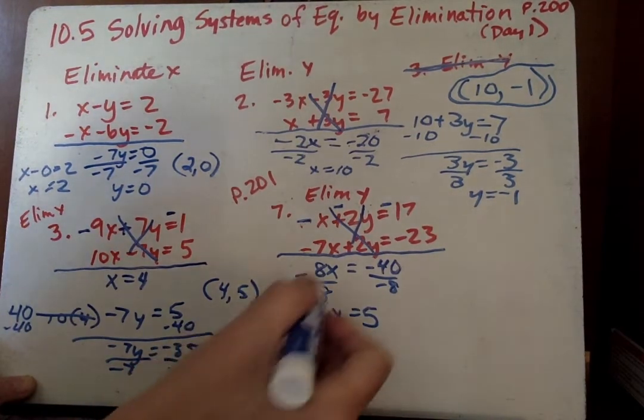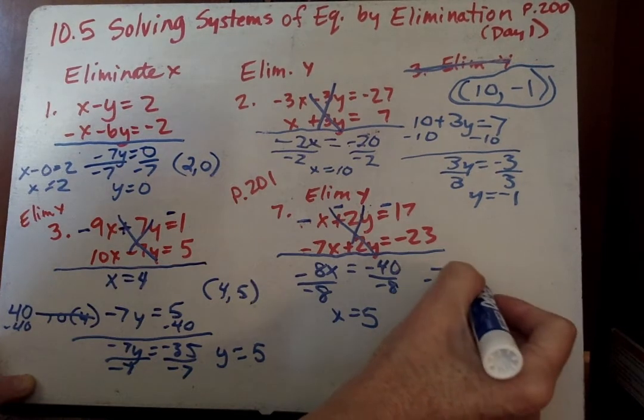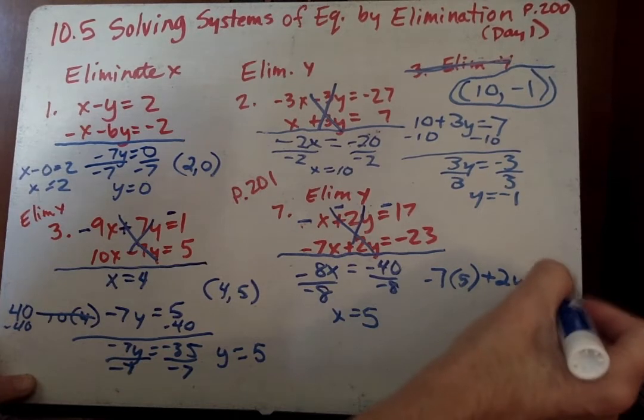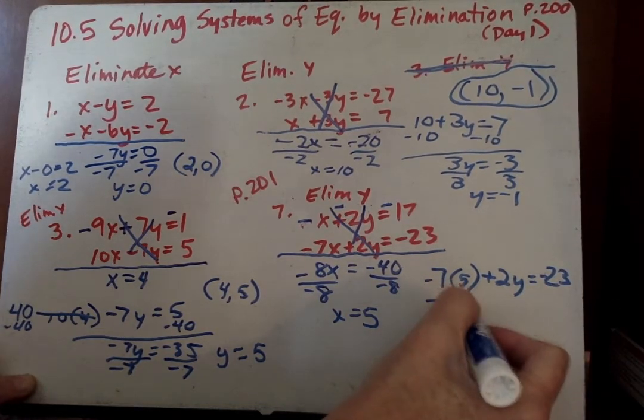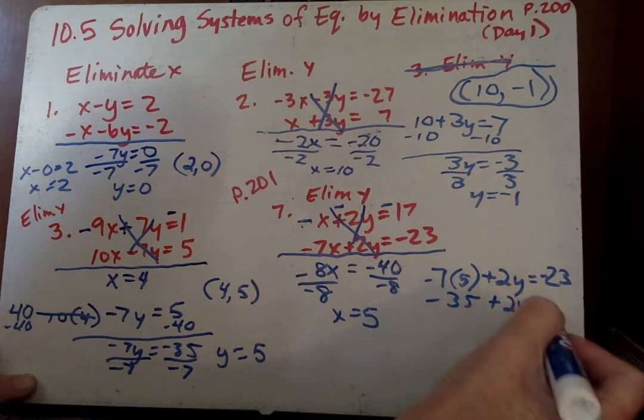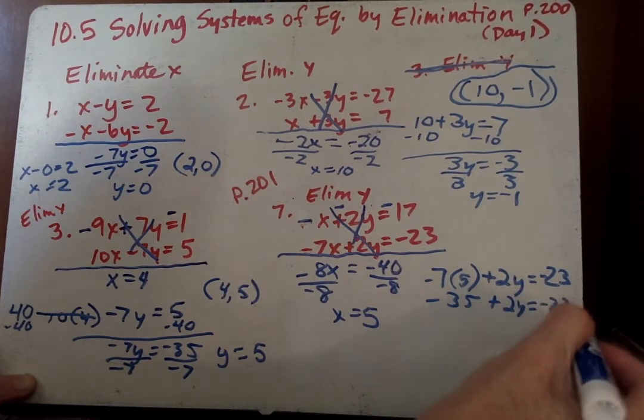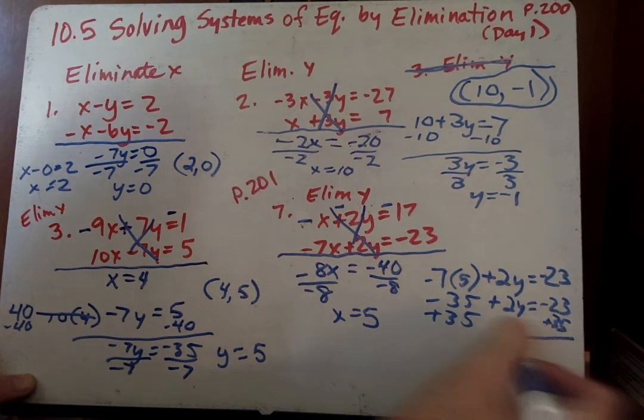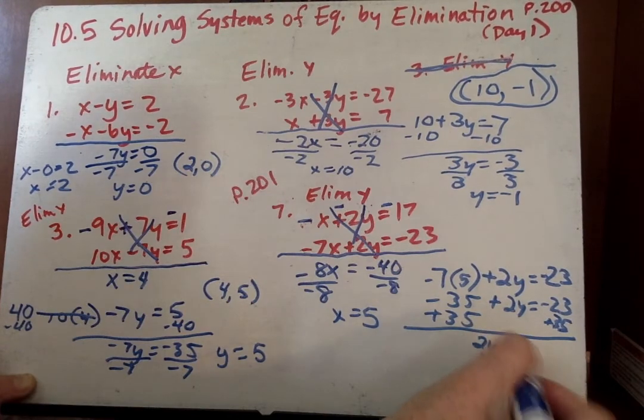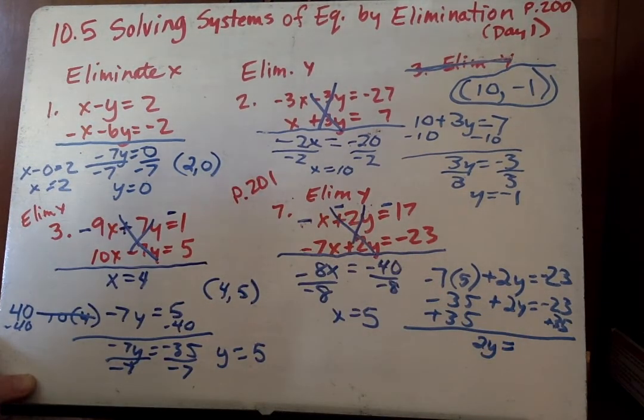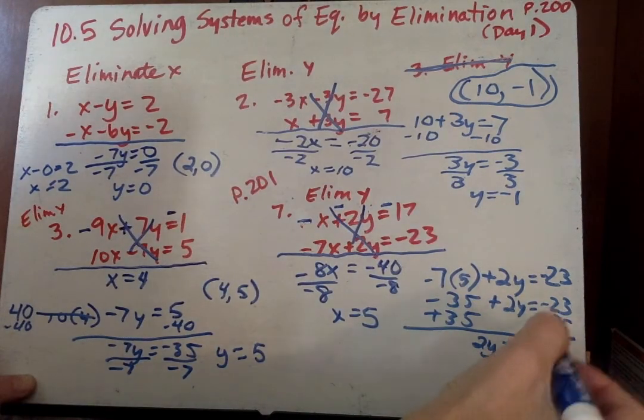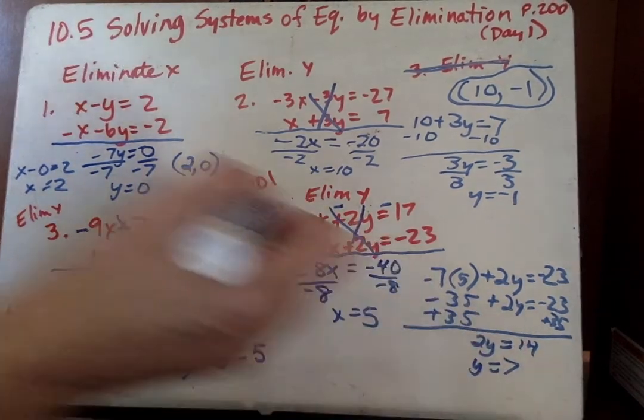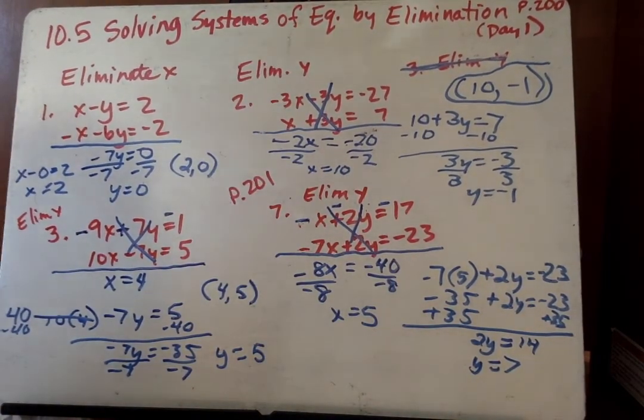Now we can put it back into the equation. Negative 7 times 5 plus 2y equals negative 23. Add 35. And we get 2y equals, hmm, is that 14? 15. We have to subtract because it's a battle. So y equals 7. So then we write it in ordered pair form.